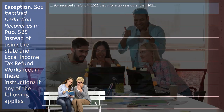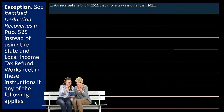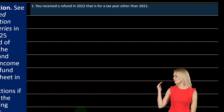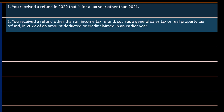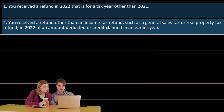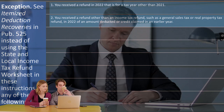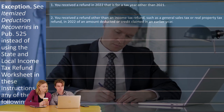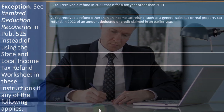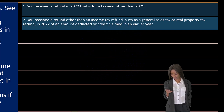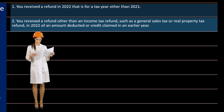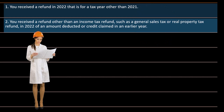See itemized deduction recoveries in Publication 525 on the IRS website instead of using the state and local income tax refund worksheet if any of the following applies. Number one: you received a refund in 2022 for a tax year other than 2021. That can happen if someone filed a late return for 2020, for example, and got a refund for a tax year other than the prior year — which still raises the same question of whether they got a benefit when they filed that return. Number two: you received a refund other than an income tax refund — such as a general sales tax or real estate tax refund — of an amount deducted or credited in an earlier year.